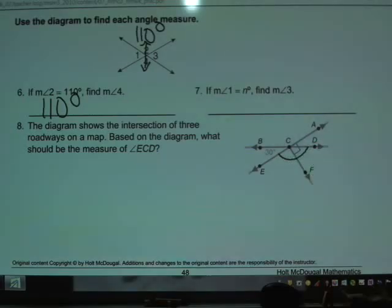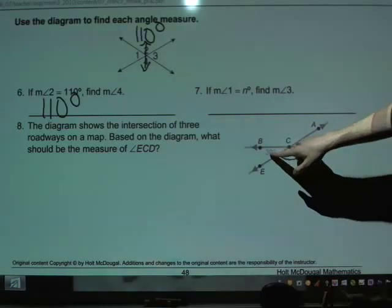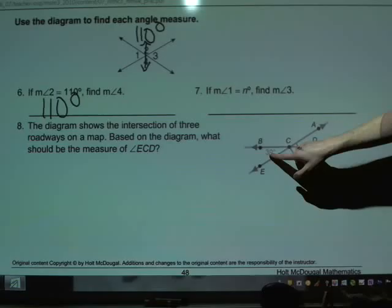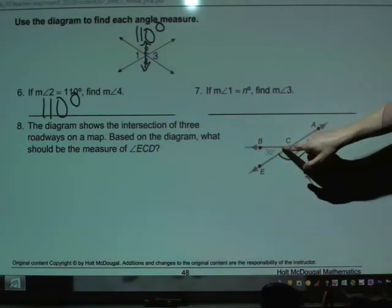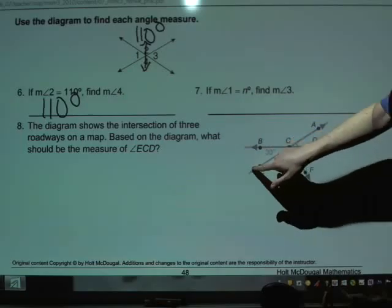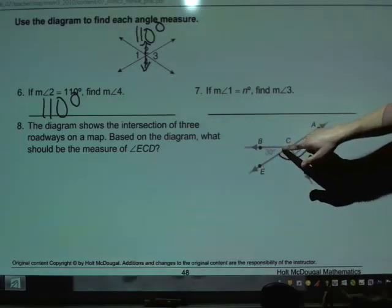Now, we have a few pieces of information there. First off, we see that this angle they've already marked for us. This angle right here, that we would call BCE or ECB, this little angle off here to the left, is 30 degrees.